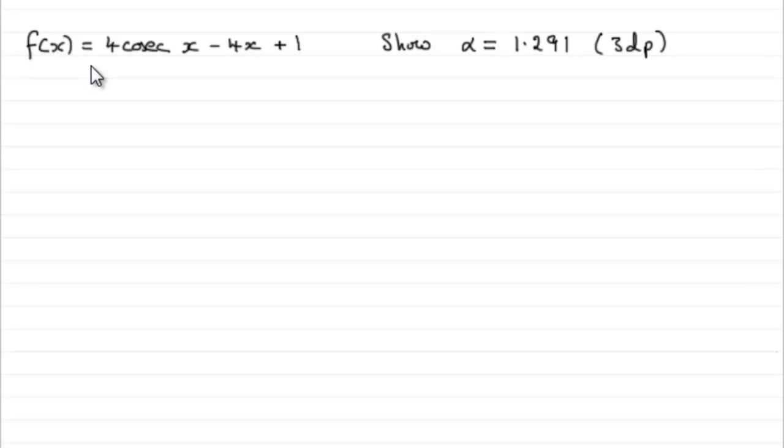Okay then, for this last part, we've got to show that the root alpha for this equation when it equals zero is 1.291 to three decimal places. And we do it by a change of sign. That's what we're asked to do.